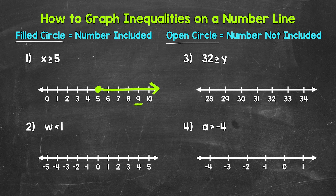Let's move on to number 2, where we have w is less than 1. For this example, our number in the inequality — 1 — is not included. It's not a solution. W has to be less than 1. Think about it: 1 is not less than 1; 1 is equal to 1. So it's not a solution. We need an open circle to show that 1 is not included.